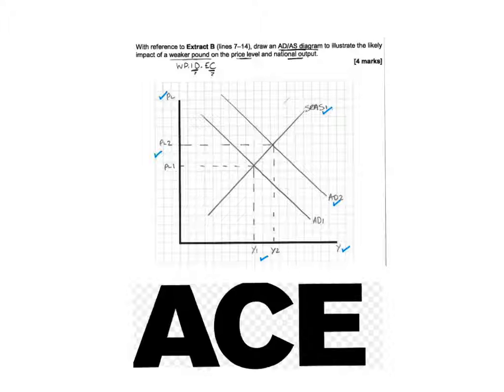Just to add as well to this diagram, I could have looked at imports being dearer. And what that would have caused is a leftwards short run aggregate supply shift. So I could have, if I wanted to, focused on short run aggregate supply and just done the initial AD1. But it doesn't really matter which one you go for because in the mark scheme, they have both for imports being dearer and another one for exports being cheaper. So you get the full marks.